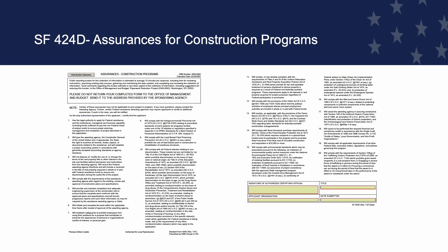Form SF-424-D is used as an attachment to Standard Form SF-424-C, Budget Information for Construction Programs. The form represents a list of federal assistance standards, policies, and federal laws involved in construction projects. The applicant will certify to comply with all requirements when utilizing any awarded federal funds.